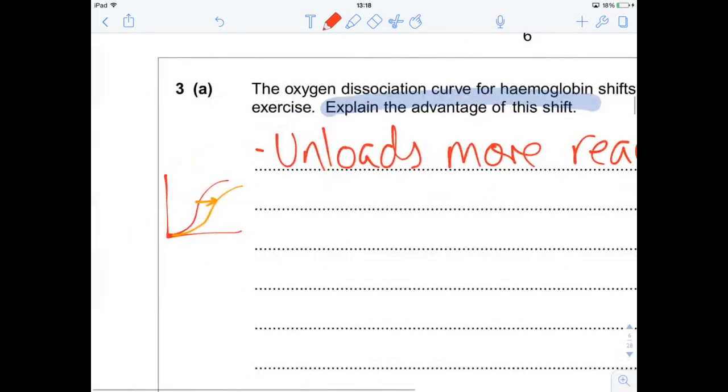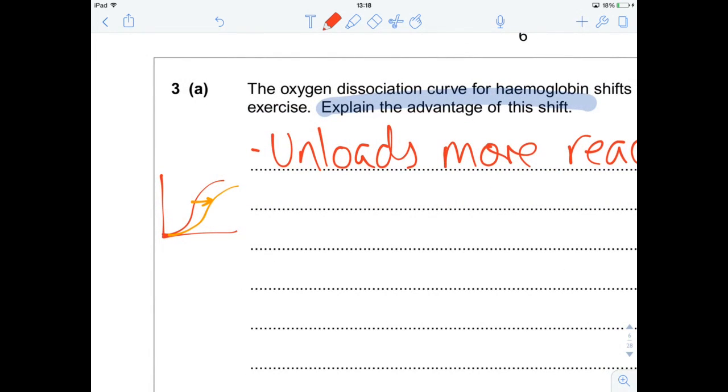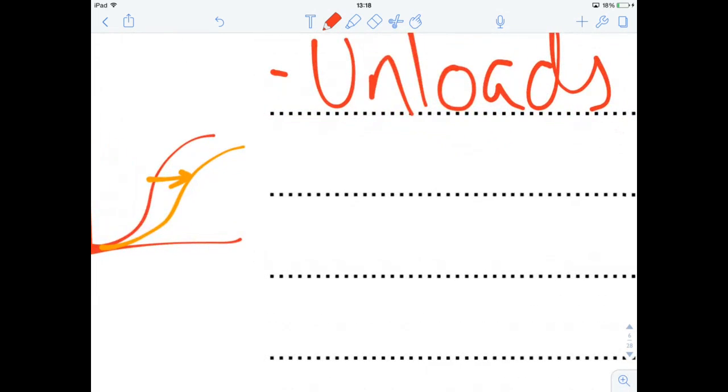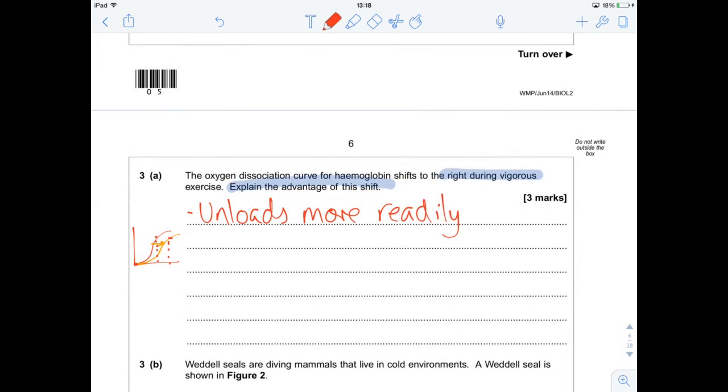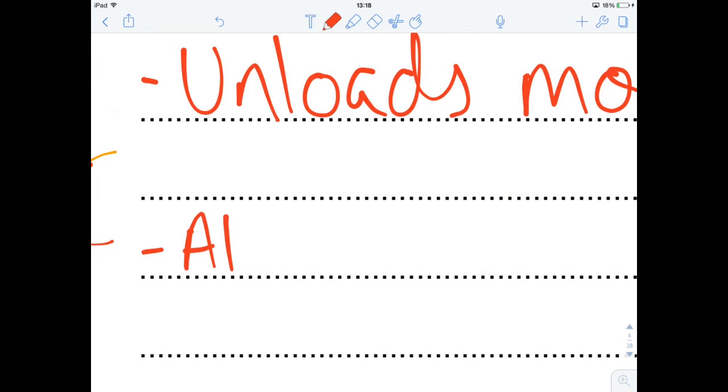So it unloads more readily, and it's going to start doing this at a higher partial pressure of oxygen. So on the graph, it's unloading further to the right. So unloading starts about here rather than here. So, you know, a big difference in terms of partial pressure. So at a higher partial pressure of O2, so it starts unloading sooner.